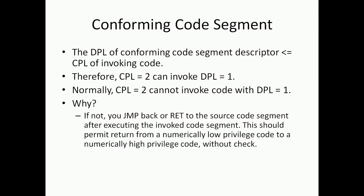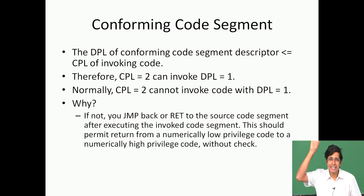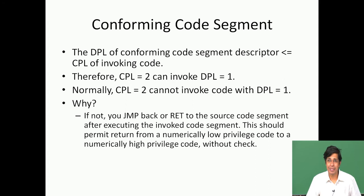The DPL of a confirming code segment descriptor should be less than or equal to the CPL of the invoking code. Therefore, CPL equal to 2 can invoke a confirming code segment with DPL equal to 1. Normally CPL equal to 2 cannot invoke a code with DPL equal to 1, but if it is confirming you can. However, CPL equal to 2 cannot invoke a code with DPL equal to 3, because that means a level-3 code would start executing at privilege level 2.